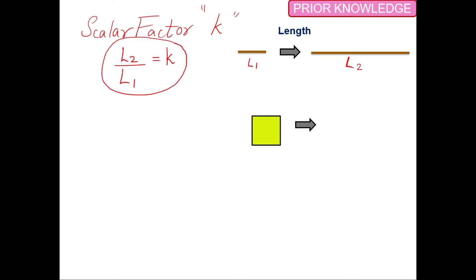When it comes to the area of similar shapes, considering the area of the smaller square to be A1 and the larger to be A2, then the ratio A2 over A1 will equal k squared.